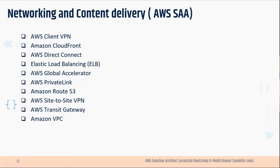Any confusion on Amazon VPC? Any questions? We already covered Amazon VPC in the previous couple of classes. We did a kind of overview of Amazon Route 53. We will perform some hands-on going forward. Any questions on how Route 53 works, what are the types of routing, and what are the functionalities of Route 53?